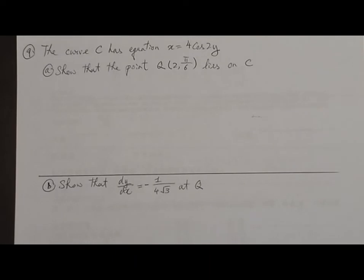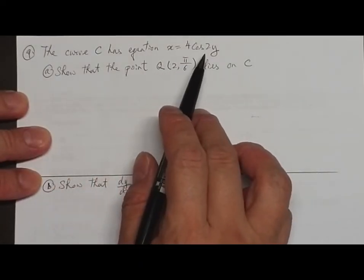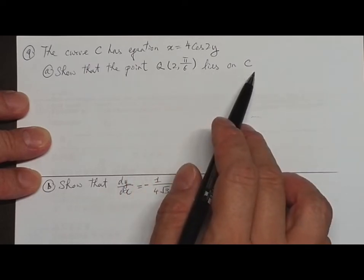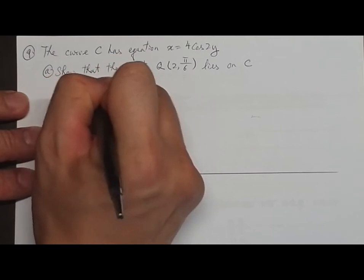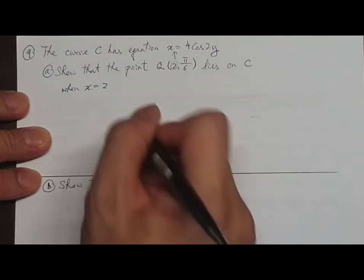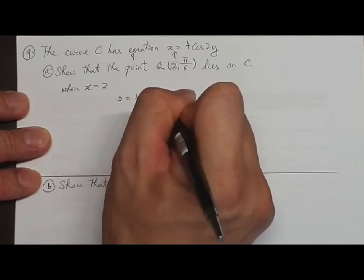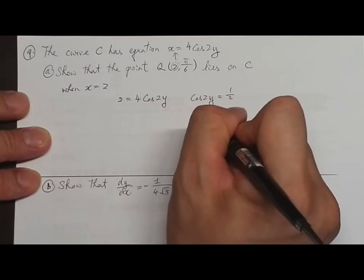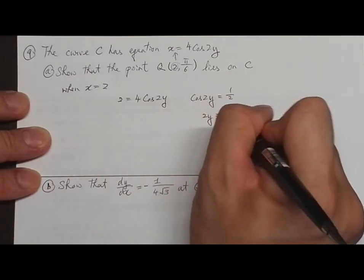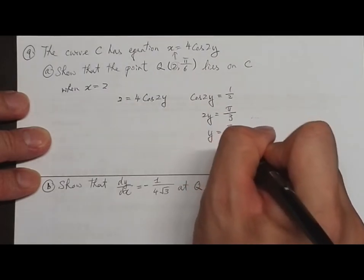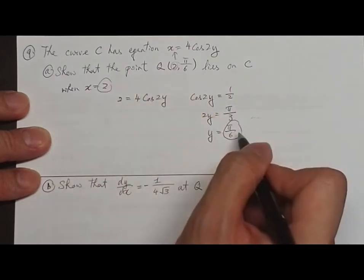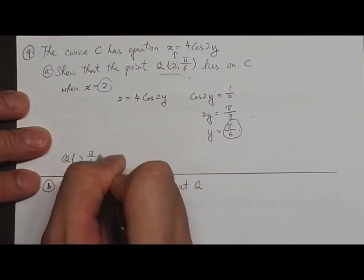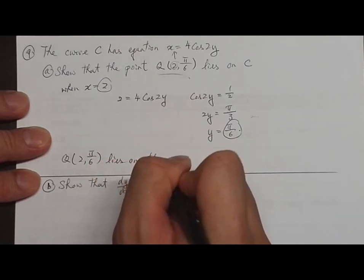Question 9: The curve C has the equation x = 4cos(2y). Part A: Show that the point Q(2, π/6) lies on curve C. When x = 2, substituting gives 2 = 4cos(2y), so cos(2y) = 1/2, meaning 2y = π/3, so y = π/6. Therefore the point Q(2, π/6) lies on curve C. Proved.